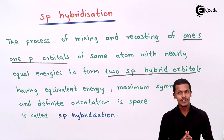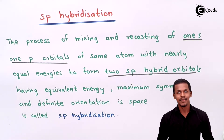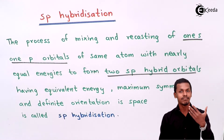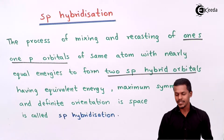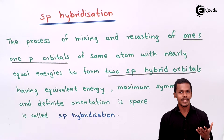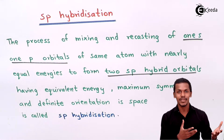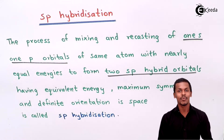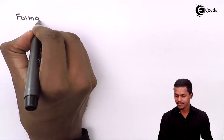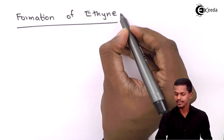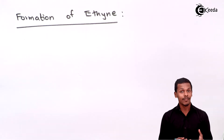Since we are talking about the mixing of 1S and 1P orbital, they will form an equivalent number of hybrid orbitals — that is, 2 hybrid orbitals — and they will form a symmetrical molecule with a proper orientation, bond angle, and specific bond angle. Now let us talk about the example. We are considering ethyne, similar to how we considered methane earlier.